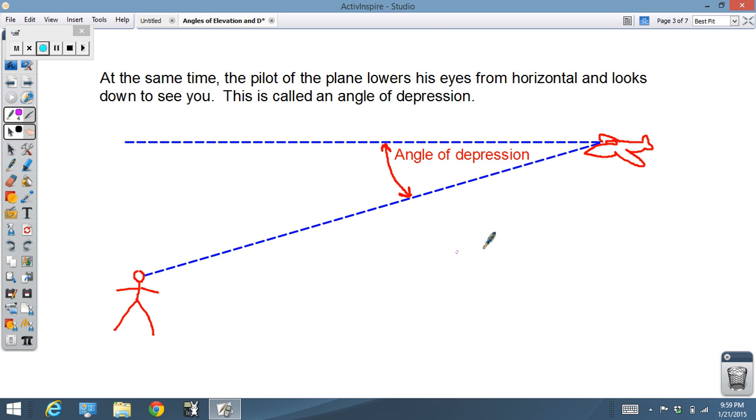An angle of depression, meanwhile - we've got the airplane pilot, his eyes are at this level and he's looking down. Therefore, any angle between the level looking down is called an angle of depression. Easy enough.